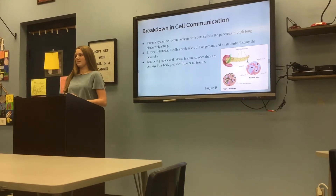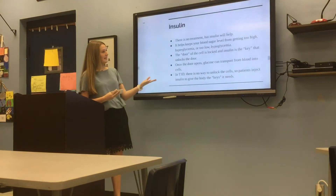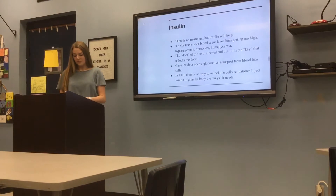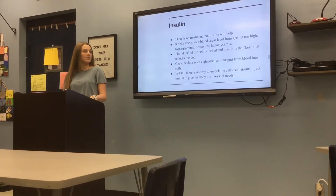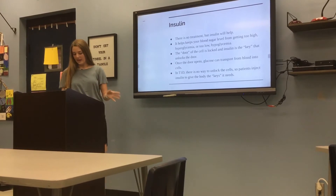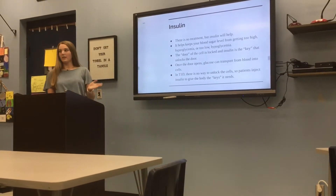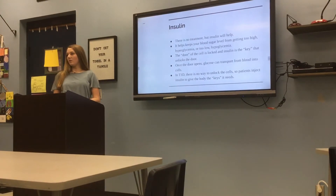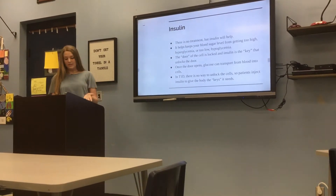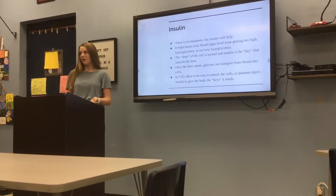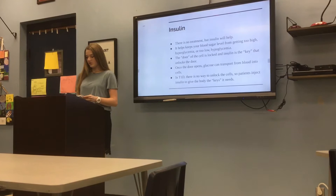Your body then has little or no insulin, which is very important because insulin helps keep the blood sugar levels balanced — so it won't get too high or too low. A good analogy for this: it's kind of like the cell has a door, and the door is locked. The insulin is the key that will unlock the door so the glucose can travel through. But in type 1 diabetes, there is no way to unlock the cell, so there is no way for glucose to travel through.